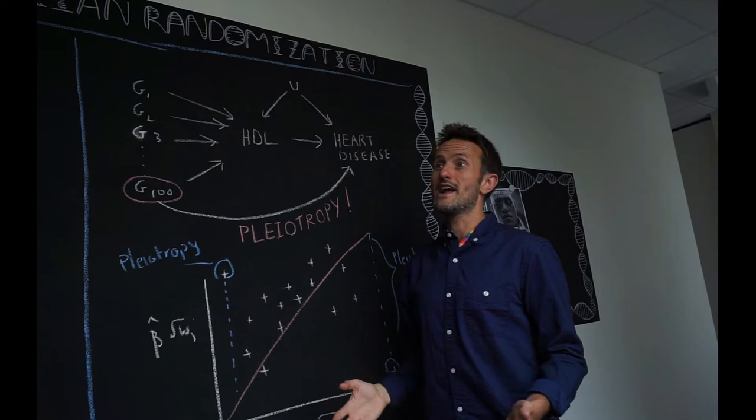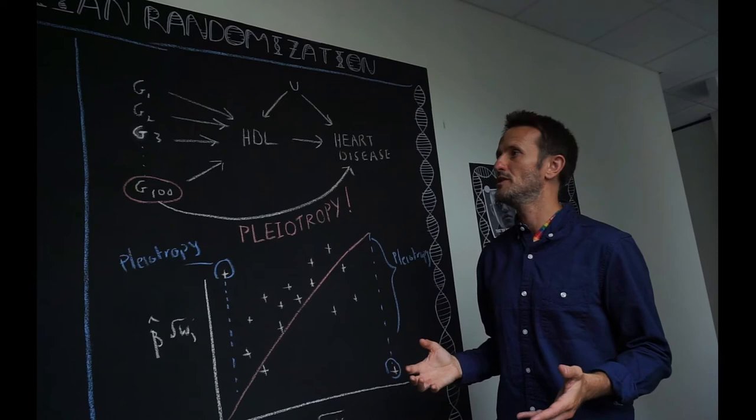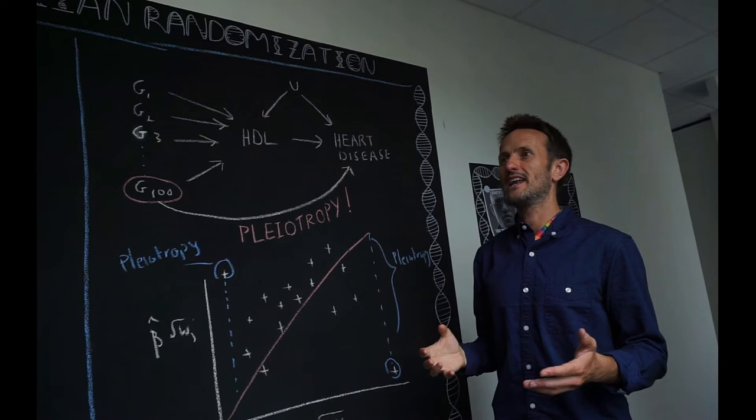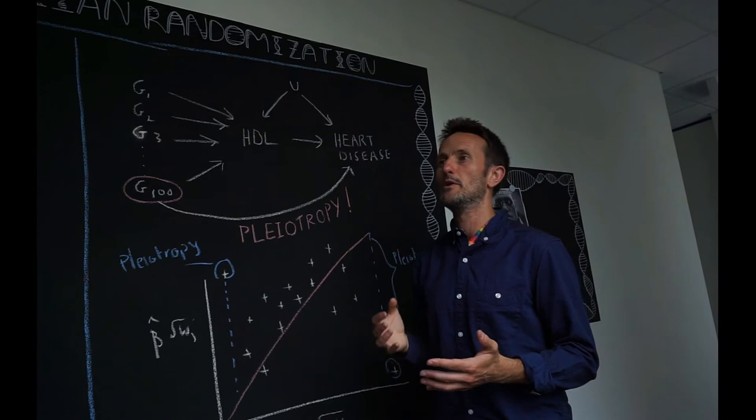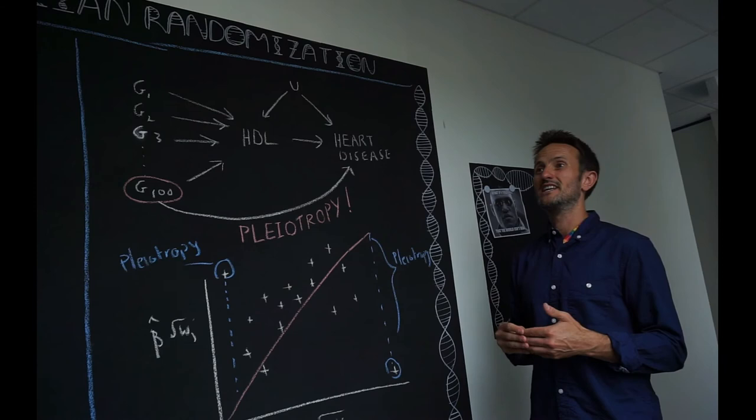My latest research is about how to use the causal effect estimates that we obtain from lots of different genetic variants to try and detect whether some of those genetic variants are invalid instruments. We use a range of statistical bias adjustment methods, but also graphical tools where the pleiotropic variants show up as outliers on a summary data plot like this one here, so that scientists can identify possible pleiotropic variants and then investigate them further and potentially remove them from the analysis before proceeding.